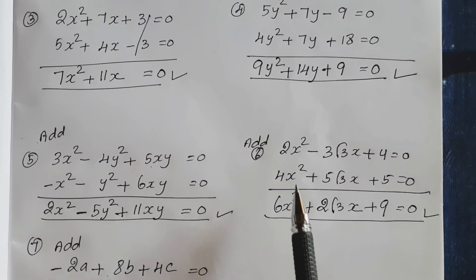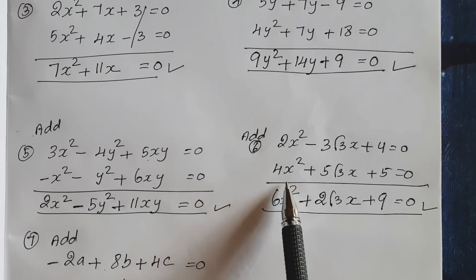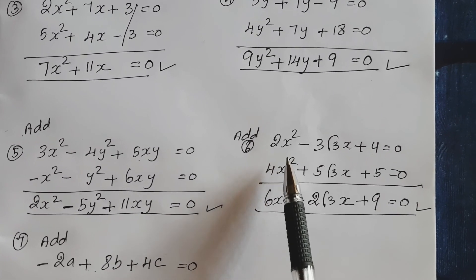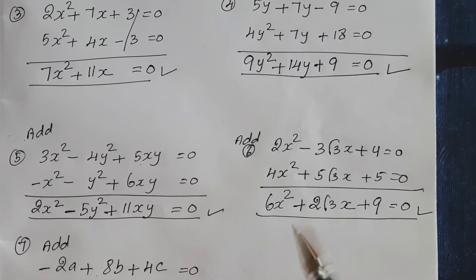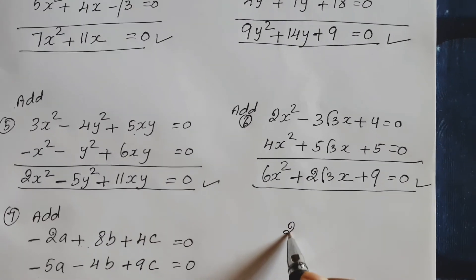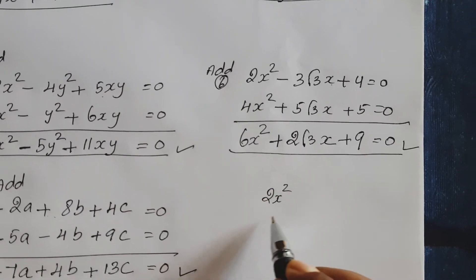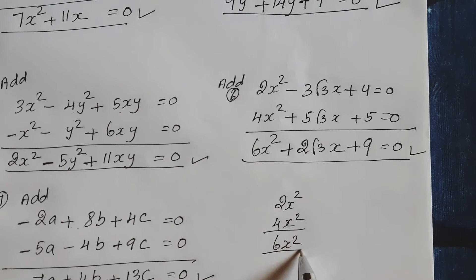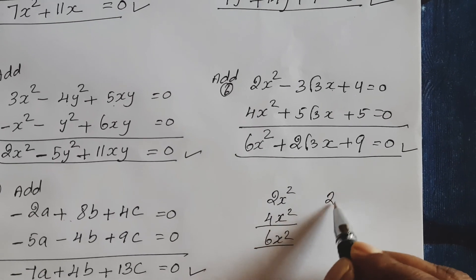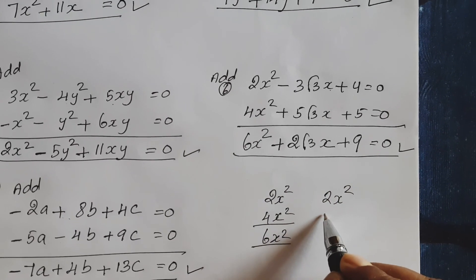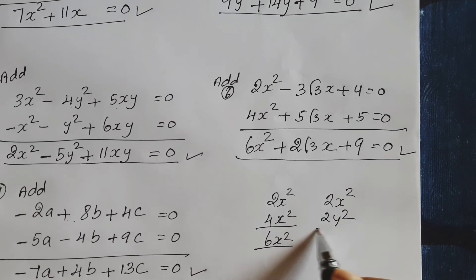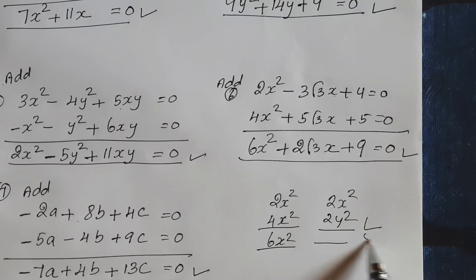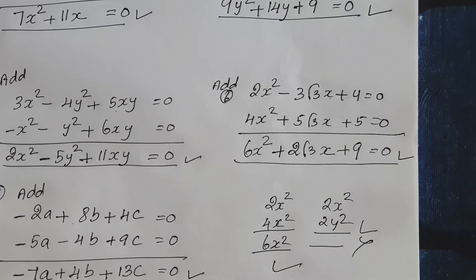Students, focus on same variables. Don't add separate variables. For example, 2x² plus 4x², we can add to get 6x². Cannot add 2x² to y². We cannot add this. This is wrong. This is correct.